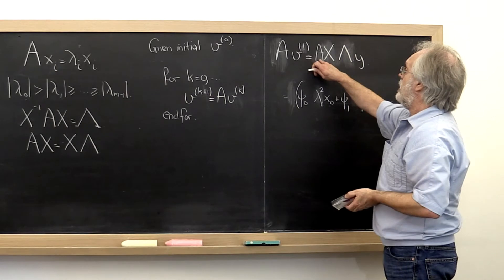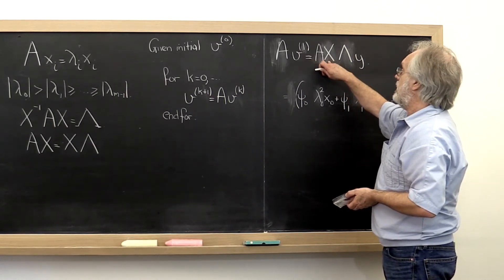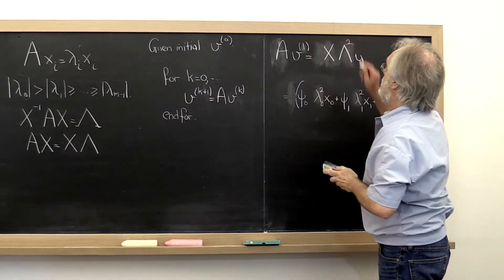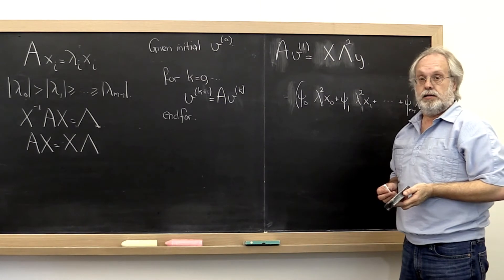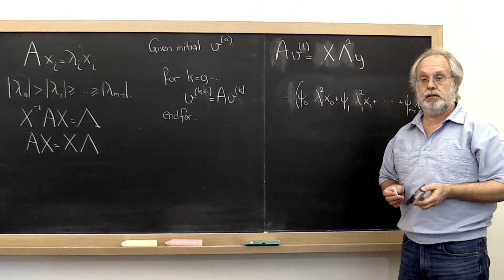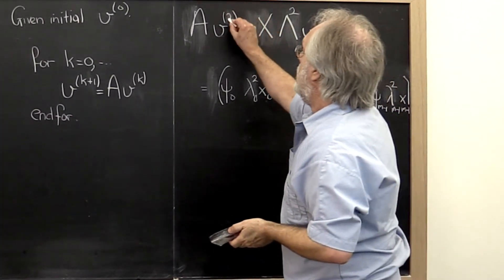Alternatively, you can go up here and say A times x can be replaced by x times lambda. So this right here is the same as that right there. This is just a different way of expressing this. At that point, this becomes v2.